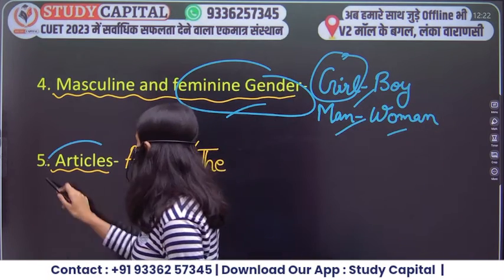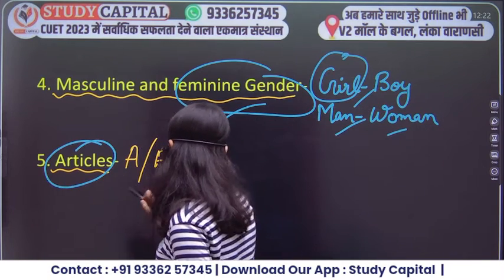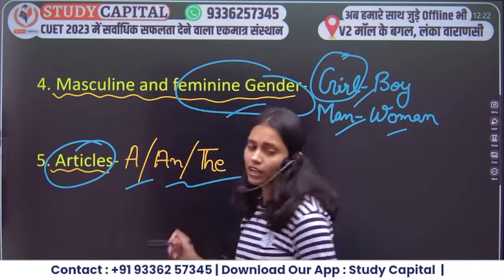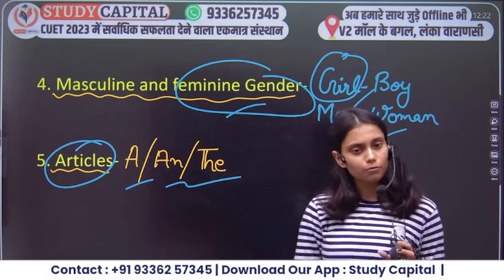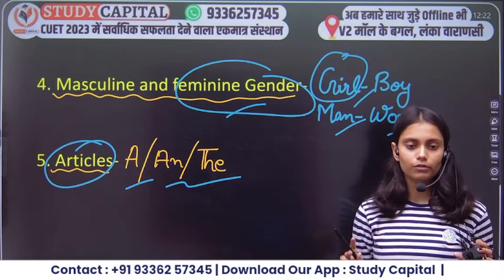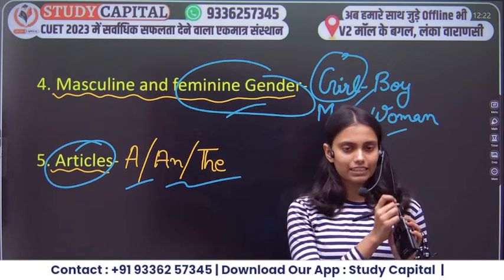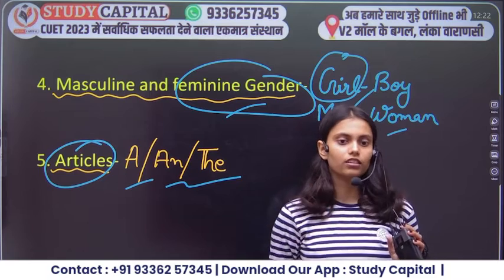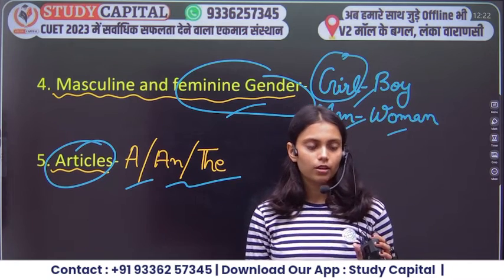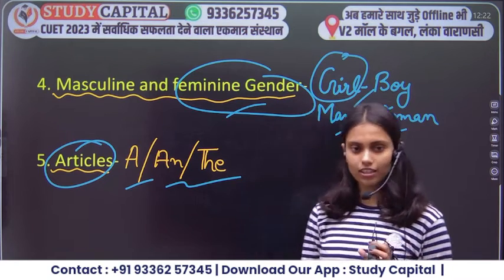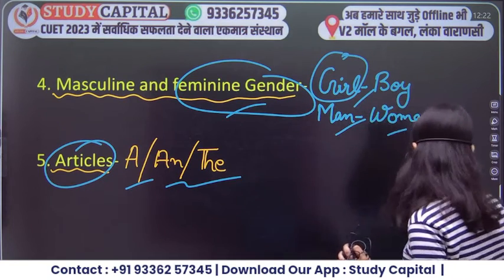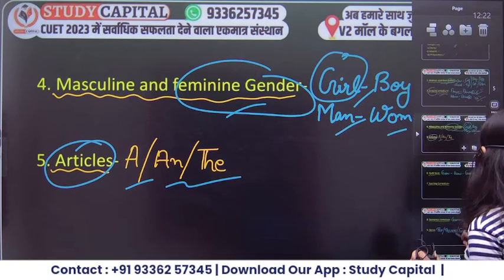Next topic is articles — A, An, and The. The question type is basically fill in the blanks, where you are given a sentence with a blank or dash and you have to fill in the correct article.